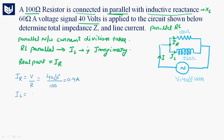Similarly, IL equals V divided by XL. V is 40∠0° and XL is 60∠90°. Why do we take 90 degrees? In the case of an inductor, the current lags the applied voltage by 90 degrees. That is why we take XL at 60∠90°, giving IL equal to 0.66∠-90° amperes.